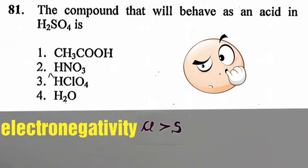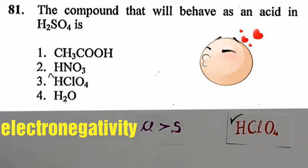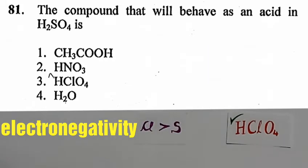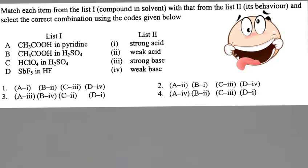Therefore, HClO4 is more acidic than sulfuric acid and behaves as an acid in it. Although you need to remember that HClO4 acts as a weak acid in sulfuric acid. Here is another question from December 2012.